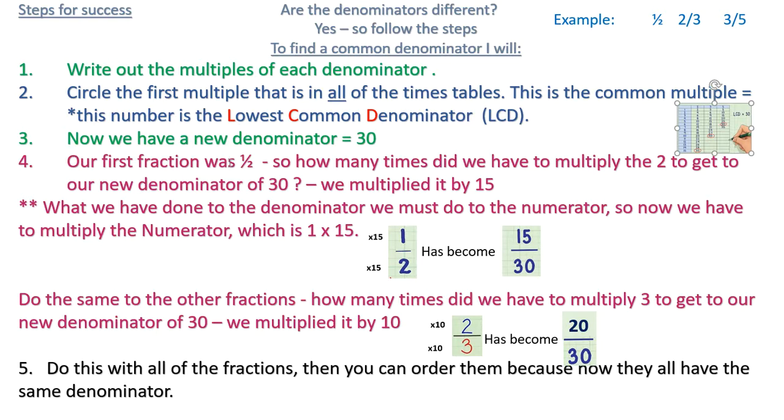The first fraction we looked at was a half. So how many times did we have to multiply the 2, the denominator, to get to our new denominator of 30? Well, we multiplied it by 15. What we did to the denominator, we must do to the numerator. So we've now multiplied the numerator by 15. So now we do 15 times 1. So our half has now become 15 over 30.